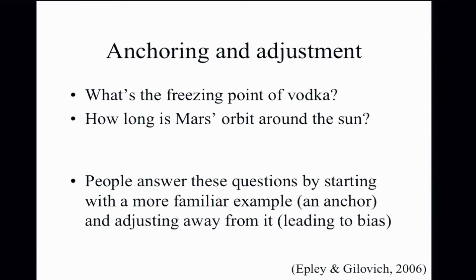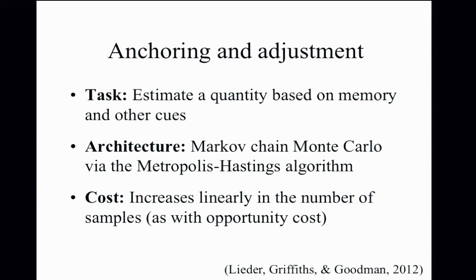The phenomenon of anchoring and adjustment is one where people make an iterative modification to a quantity but don't go far enough to be unbiased. We can ask whether in this situation a bias is a reasonable thing to have. We formulate this as a task of estimating a quantity based on memory information, using the Metropolis-Hastings algorithm as an estimator — an iterative algorithm for producing samples from a probability distribution — with cost increasing linearly in the number of samples. The trade-off is quality of the answer versus time spent thinking about it.